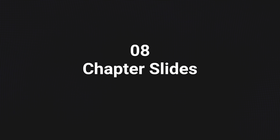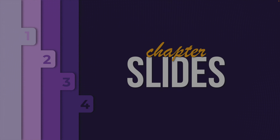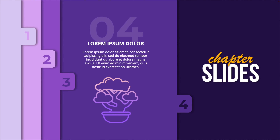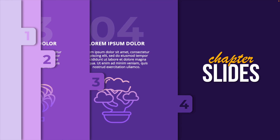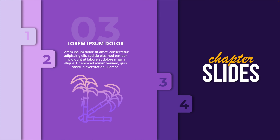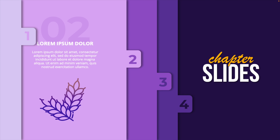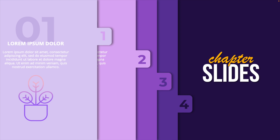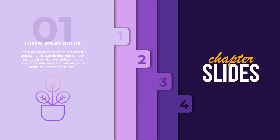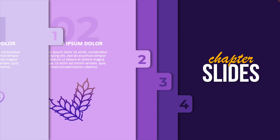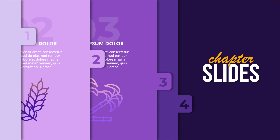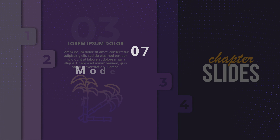This brings us to number 8, which is chapter slides. For this presentation, I used the morph transition to pull out different tabs on clicks. It's a really cool effect you could use while presenting and it gives a nice dynamic look and feel to your presentation. I'm also pretty happy with the colors of this presentation, and it kind of blew up on my channel a few months ago.